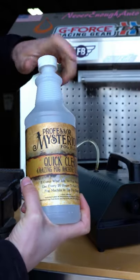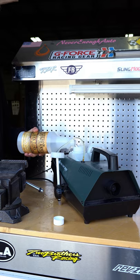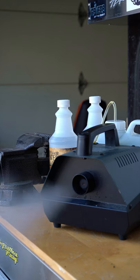Open your quick clean fog machine cleaner. Pour quick clean into your fog machine tank and turn it on. Run your fog machine for 5 to 10 minutes.